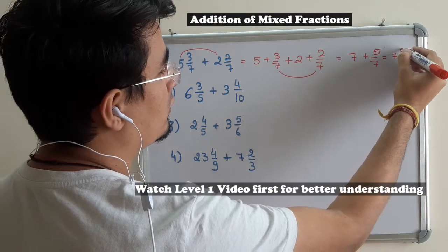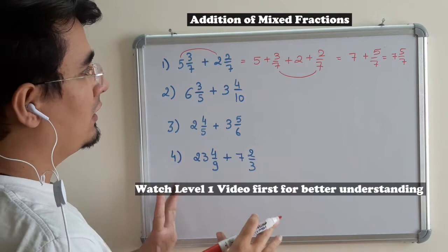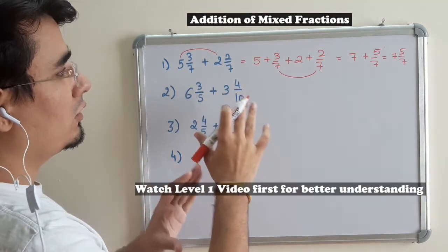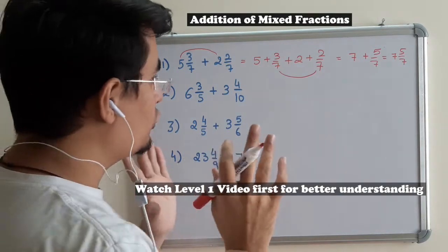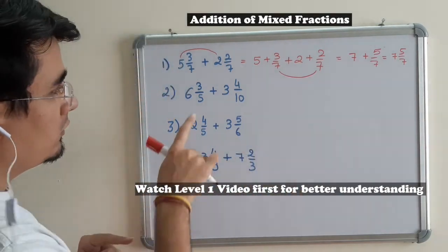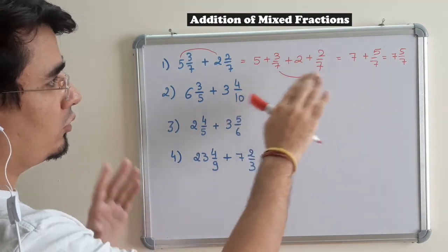So 7, 5 by 7. Without taking any LCM, without converting mixed fraction to improper fraction, we can do that. I'm going to show you a short trick. Since the denominator was same, I didn't have to do anything.